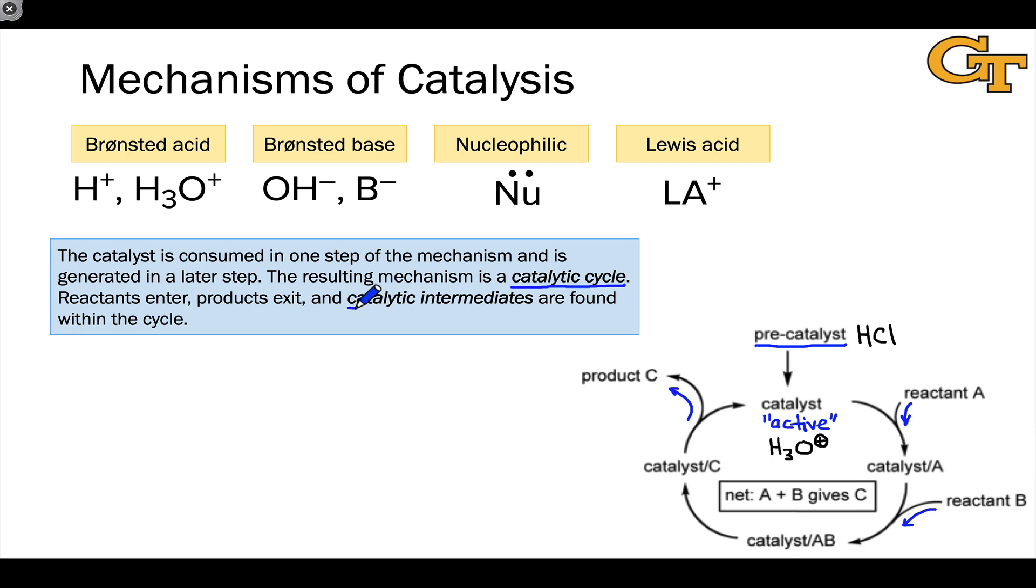Within the cycle, we find what are called catalytic intermediates. And one of the interesting things about the catalytic intermediates is that each of these can be thought of as the catalyst, quote-unquote, because each of these could be generated theoretically from a precatalyst in different ways, and that would lead to the same catalytic cycle.